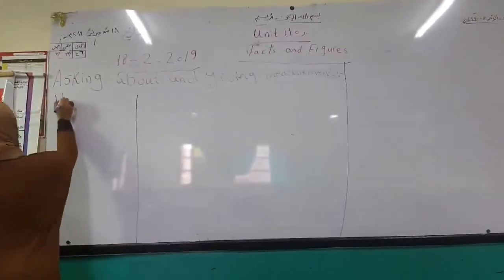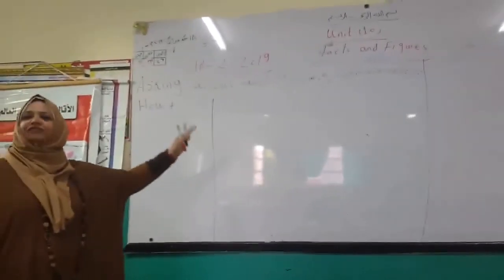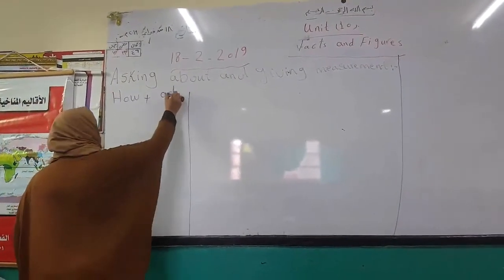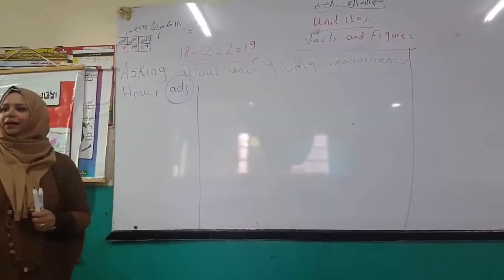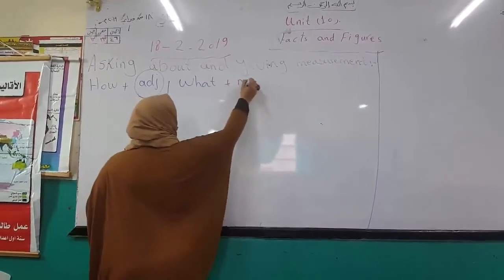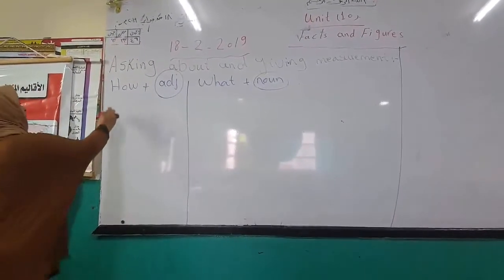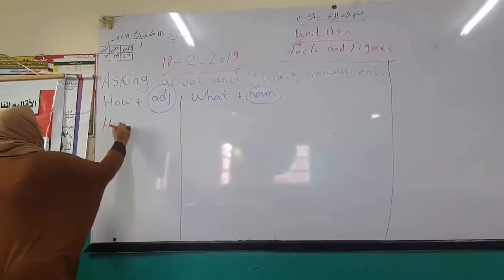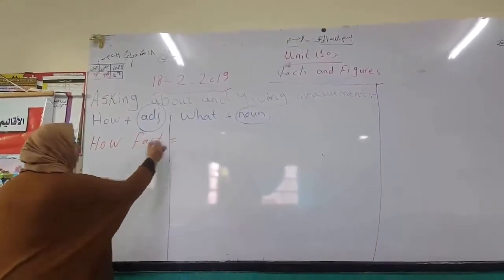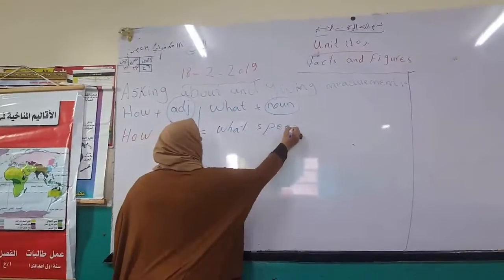We start with 'ham.' Ham — we put adjective after ham. For example: ham fast equals 'what speed?' How fast equals what speed.